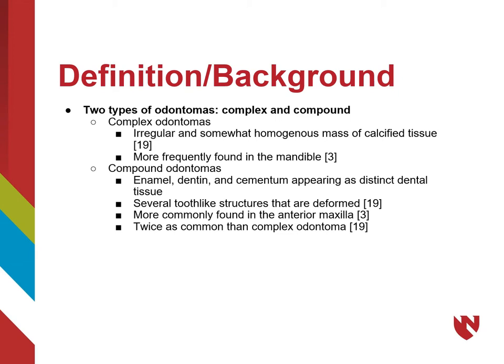Compound odontomas are characterized by enamel, dentin, and cementum appearing as distinct dental tissue. Radiographically, they appear as several deformed tooth-like structures. Compound odontomas are more commonly found in the anterior maxilla and are the most common form of odontomas, being twice as common as the complex form.